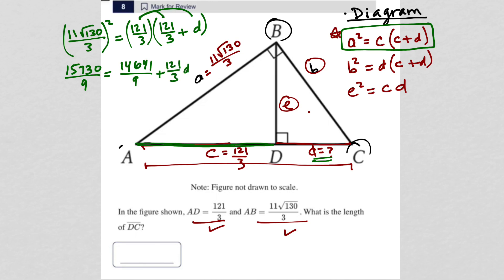So when I distribute that 121, now I just need to subtract this from both sides. So now it's gone on the right-hand side. 15,730 minus 14,641 is equal to 1,089.